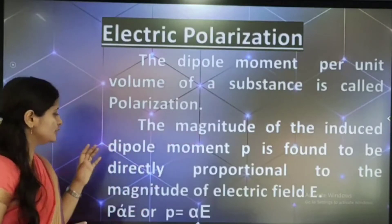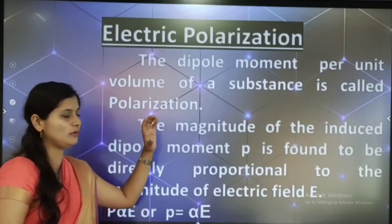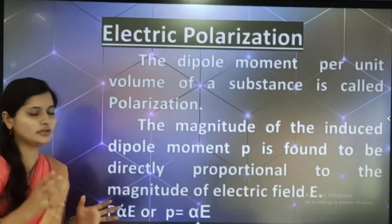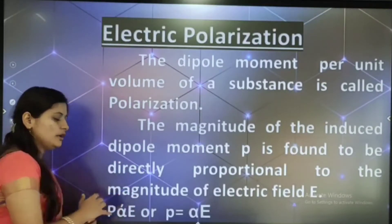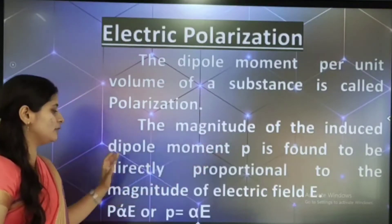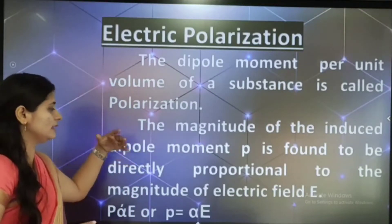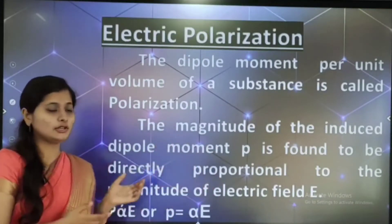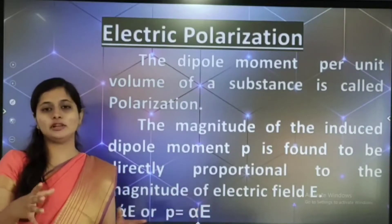The magnitude of the induced dipole moment P is found to be directly proportional to the magnitude of the electric field E. So we can write P is directly proportional to E, or P equals alpha times E, where alpha is the polarizability constant. That is one expression for the polarization.